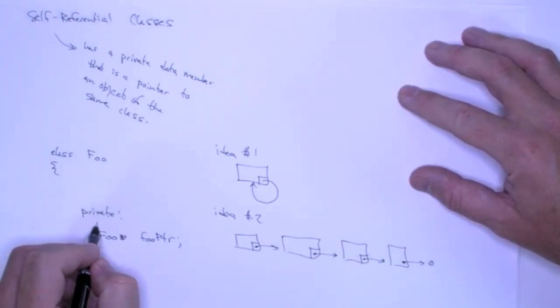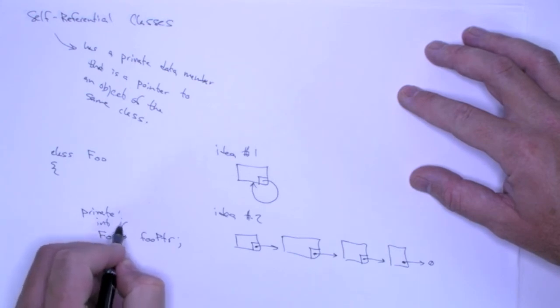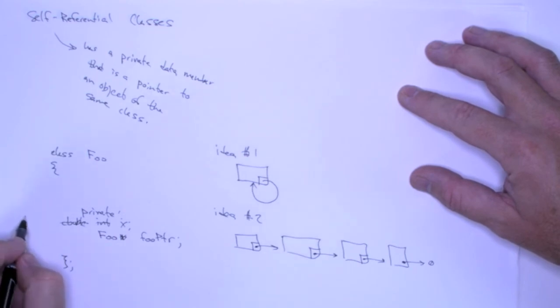I can put an integer in here. This could be a double. This could be a date. It could be any object that I want.